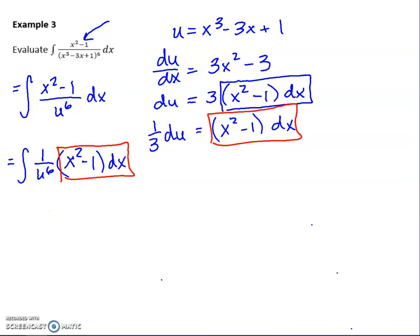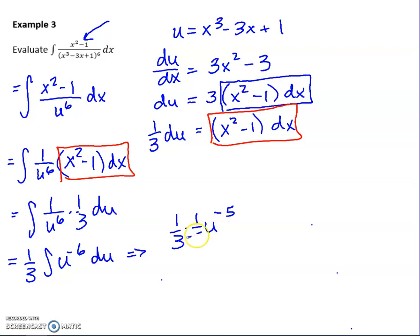These two are the same, so I'm gonna replace that with the 1/3 du. Bring that 1/3 out. I'm gonna go ahead and bring the u to the sixth up and make it u to the negative 6. Once again we're ready to do the integral and it's an easy power rule. I've got 1/3, take my power up by 1 which would actually make it negative 5, divide by negative 5, or in this case I don't like to divide, I'd rather multiply, plus C.